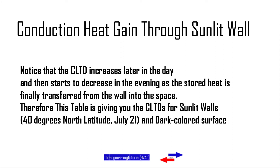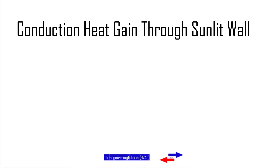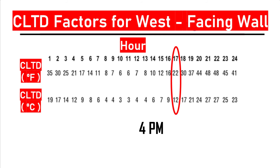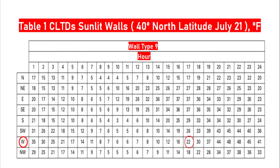More tables for various wall and roof types, as well as correction factors for applications that differ from these assumptions, can be found in the 1997 ASHRAE Handbook of Fundamentals and ASHRAE's Cooling and Heating Load Calculation Principles manual. The wall in our example is classified as wall type 9, at 4pm — hour 17 in this table. The CLTD for a west-facing wall of this type is 22 degrees Fahrenheit. This means that even though the actual dry bulb temperature difference is only 17 degrees (95°F minus 78°F), the sun shining on the outer surface increases the effective temperature difference to a CLTD of 22 degrees Fahrenheit.